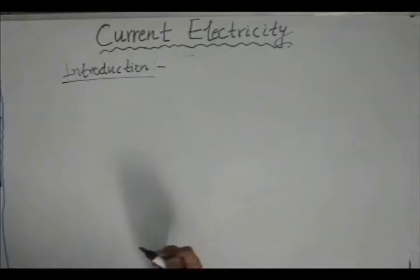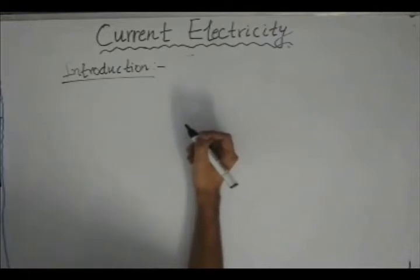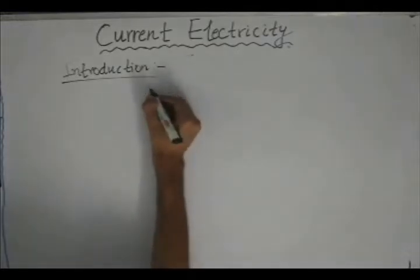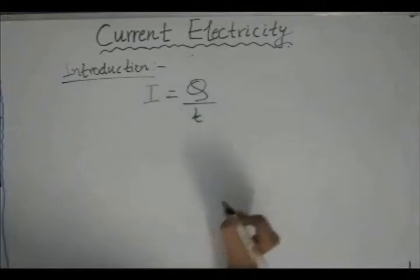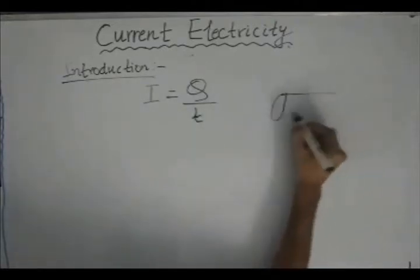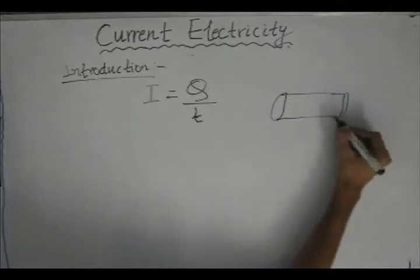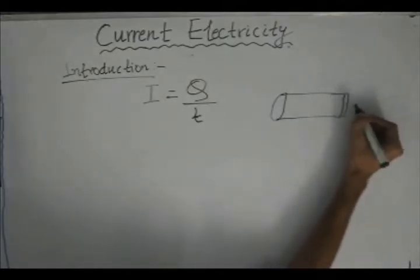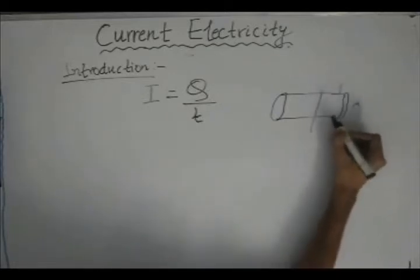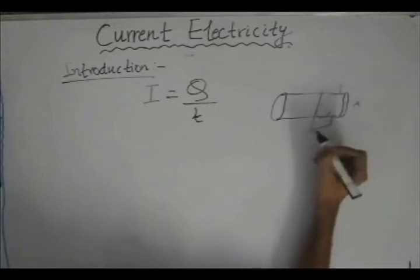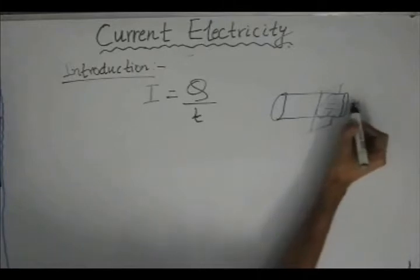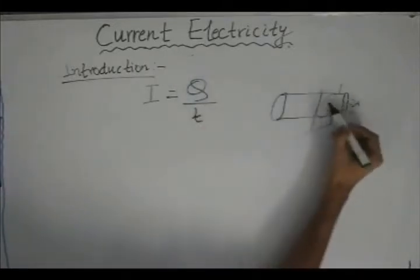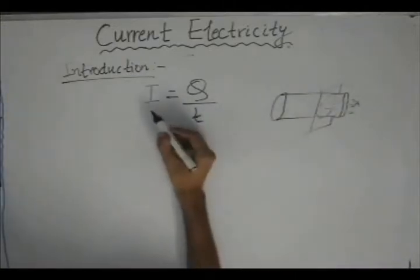Now what exactly is current? How can we define electric current? We define current quantitatively as the rate of flow of charges — or the rate of change of charges. If we consider a cross section of a conductor having an area A, the current can be defined as the rate at which charges pass through this cross section. If Q coulombs of charge pass a given cross section in time T, then the current is given as Q divided by T.